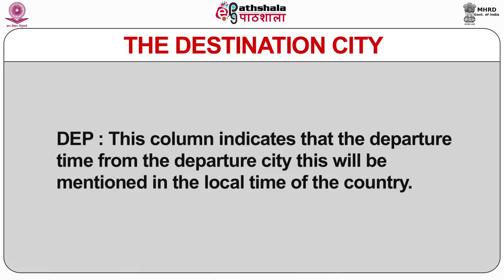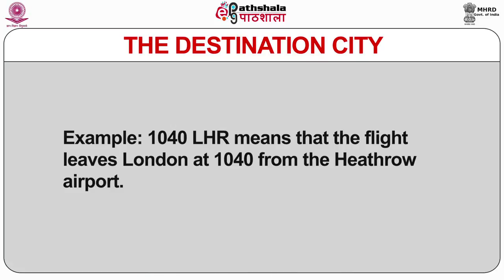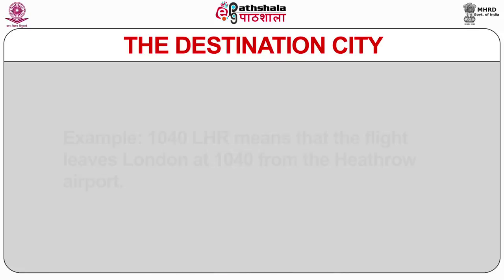The Departure column indicates the departure time from the departure city in local time. For cities with more than one airport, the time is preceded by the three-letter airport code. For example, 1040 LHR means the flight leaves London at 10:40 hours from Heathrow Airport.